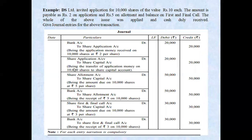Let's take an example. DS Limited invites applications for 10,000 shares of face value rupees 10 each. Amount payable: rupees 2 on application, rupees 5 on allotment, and balance on first and final call. The whole of the issue was applied and cash duly received.